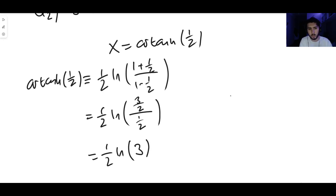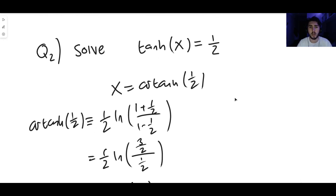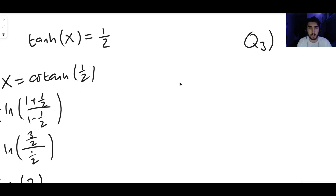So this is equal to one half times the natural log of three halves over one half. Multiplying the numerator and denominator of this fraction by two we get three over one, so this is one half times the natural log of three. If you want, you can write this as the natural log of root three by bringing the power up using the logarithm power rule, but it's fine to write it as half the natural log of three. So x equals half the natural log of three, or equivalently the natural log of root three.